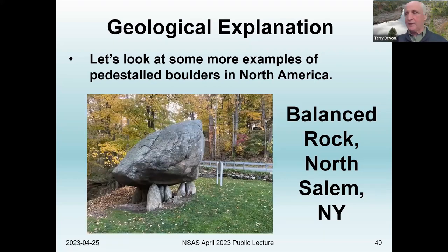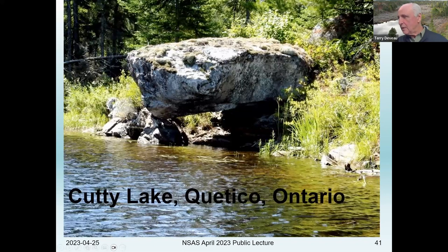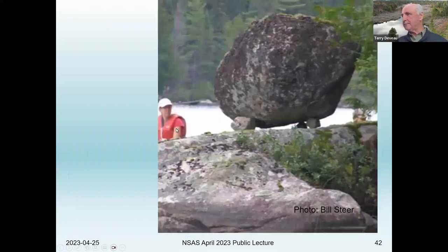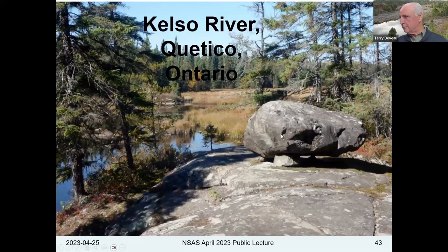Let's quickly look at a few more examples. This is one of the iconic ones — the Balanced Rock in North Salem, New York. That's the one Barry Fell used as his prototype for calling these things dolmens. Here's another one in Ontario along a canoe route, quite impressive, and another with three pedestal stones. Because you find these sometimes along Native American or Aboriginal waterways, it makes you wonder whether some were put there on purpose — it wouldn't be that hard to do.